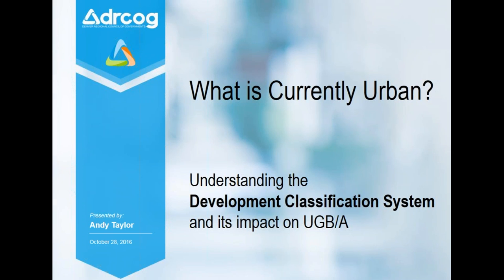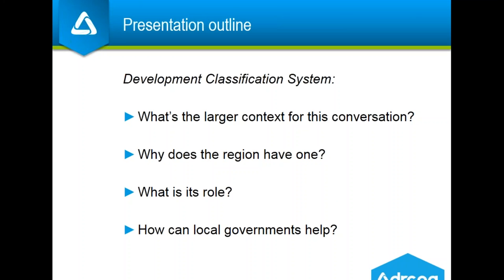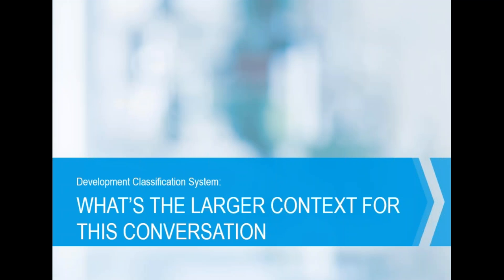Whenever I start talking about anything related to the region's Urban Growth Boundary or Area program, also known as UGBA, I get lots of questions. So it seems fitting to organize today's webcast around some questions you might be asking about the development classification system. First, what's the larger context for this conversation? Then, why does the region have a classification system and what is its role? And lastly, how can local governments help?